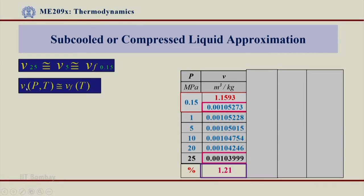We can conclude one more thing: specific volume, which is a function of pressure and temperature, in the subcooled or compressed liquid region is not a function of pressure. Even after compressing, no significant effect is seen. That means the pressure parameter is missing, and in this region, specific volume does not depend on pressure — it depends only on temperature. You can verify this using the steam tables.